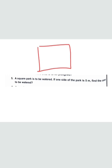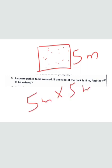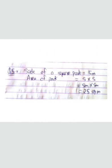Question number five: a square park is to be watered. One side of the park is 5 meters. Since it's a square, all sides are equal. Area to be watered equals side × side = 5 meters × 5 meters = 25 square meters. Side of the square park is 5 meters, area of the park equals side × side = 25 square meters.